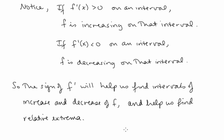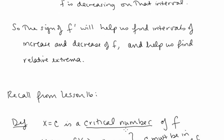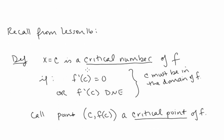If we're looking for intervals on which f' is positive and negative, we need to find the points at which f' equals 0 and the points at which f' doesn't exist — because at those points, f' can change sign. Those are our critical points. Recall that x = c is a critical number of f if f'(c) = 0 or f'(c) does not exist, and c must be in the domain of f. We call the point (c, f(c)) a critical point.